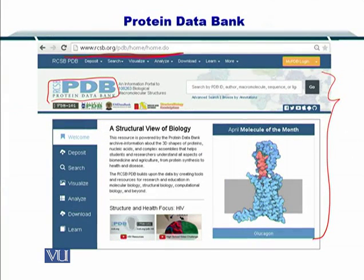Once you arrive on this portal, you can also deposit a new sequence that you may have obtained from your experimental protocol. The new structure you get will then be made public and available after verification. You can also search new structures, visualize them, and analyze them. If you want to download for offline study of structures, you can do that using the download button.